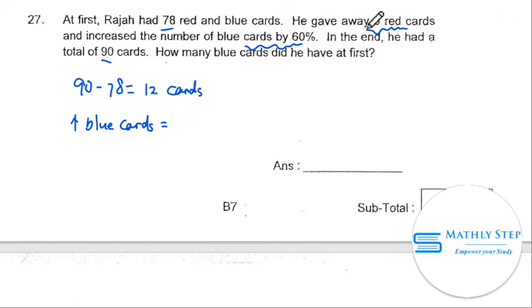Not only 12, because he gave away 6 red cards. So the increase of blue cards will be 12 plus 6, which is equal to 18 cards. That's why the total number of cards increase is 12.